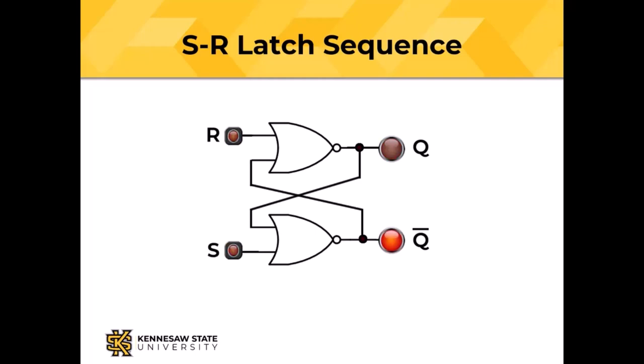Actuating the same input twice doesn't do anything. If you do S and then do S again, there is no change in the output. Similarly if you do R and then do R again.